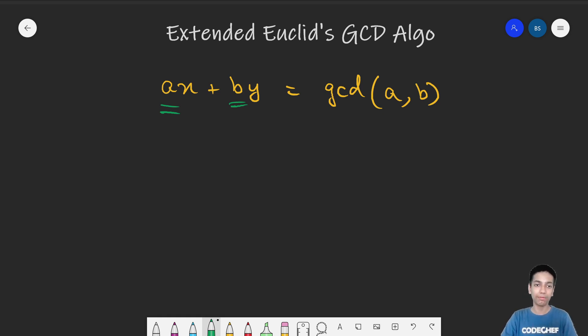So in a way, we know the value of A, B and GCD of A and B as well. We want to find any integer solutions to X and Y. One thing I want to clear is that this cannot be solved mathematically.